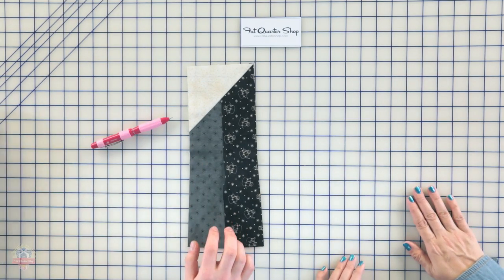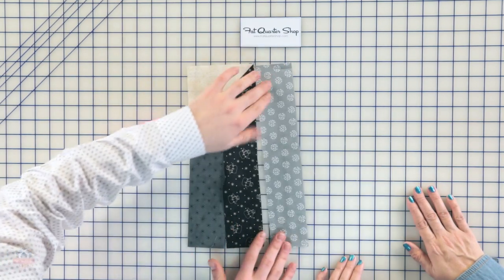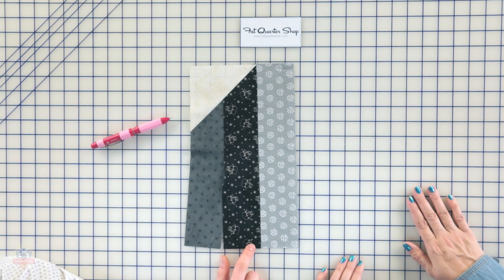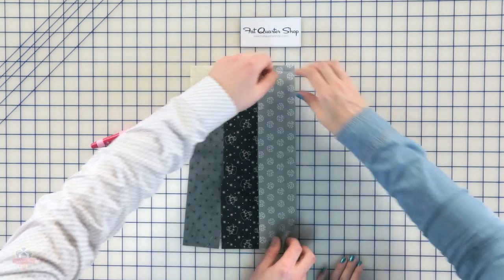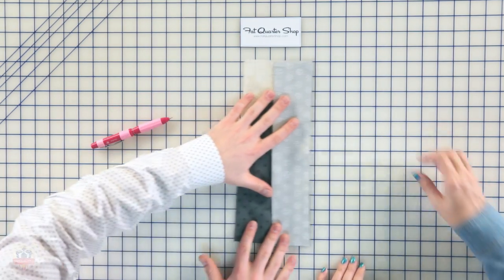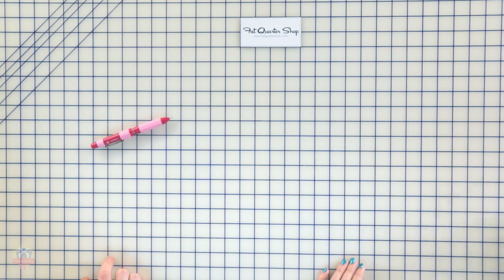Our unit's gonna look like this, and then we're gonna add another strip to the right side. When we add a strip to the right side, you're gonna be able to sew the full seam. You don't have to do any more partial seams. We're gonna put right sides together, sew a quarter of an inch seam, and then press to the strip.